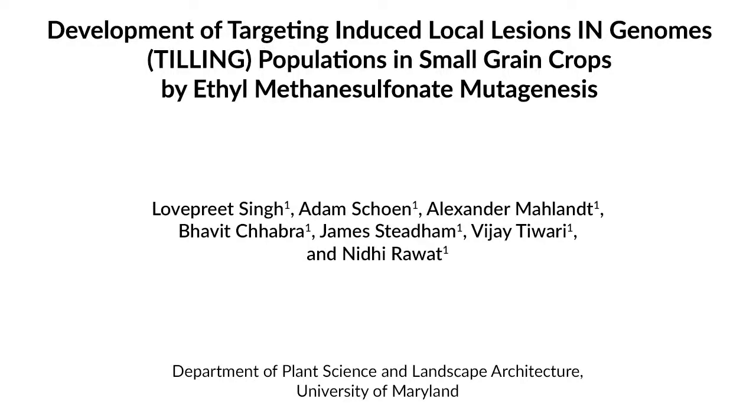This protocol details the development of robust tilling populations with high mutation frequency by EMS mutagenesis in small grain crops. Tilling populations can be used for functional genomics as well as for forward genetics-based gene discovery in small grain crops. The tilling populations developed using this technique have high mutation frequencies, and this protocol can be applied to any genotype.